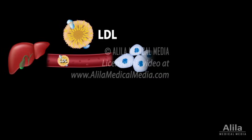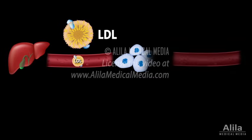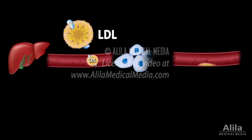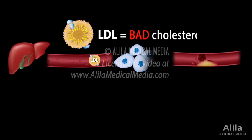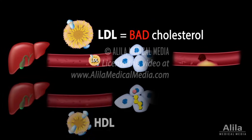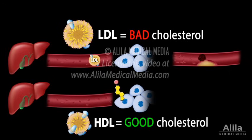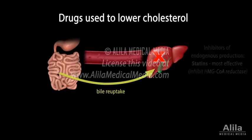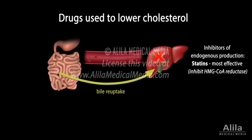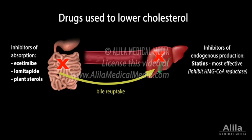LDL has the highest cholesterol content and is the major carrier of cholesterol in the blood. High levels of LDL in the blood are associated with cholesterol plaque buildup and cardiovascular diseases, such as heart attacks and strokes. For this reason, LDL is known as bad cholesterol. On the other hand, HDL is called good cholesterol because it removes excess cholesterol from tissues and the bloodstream. Common drugs used to lower cholesterol include inhibitors of endogenous cholesterol production, inhibitors of intestinal cholesterol absorption, and inhibitors of bile reuptake.